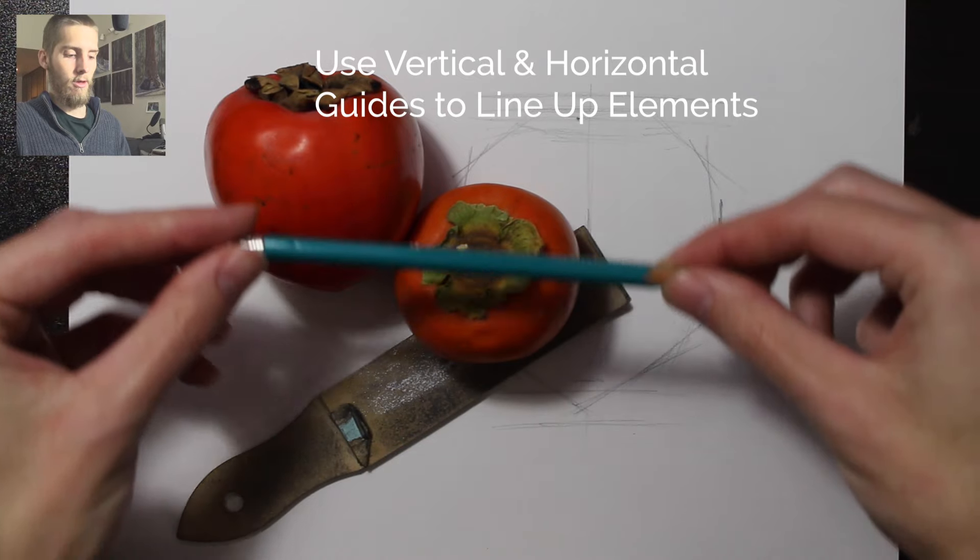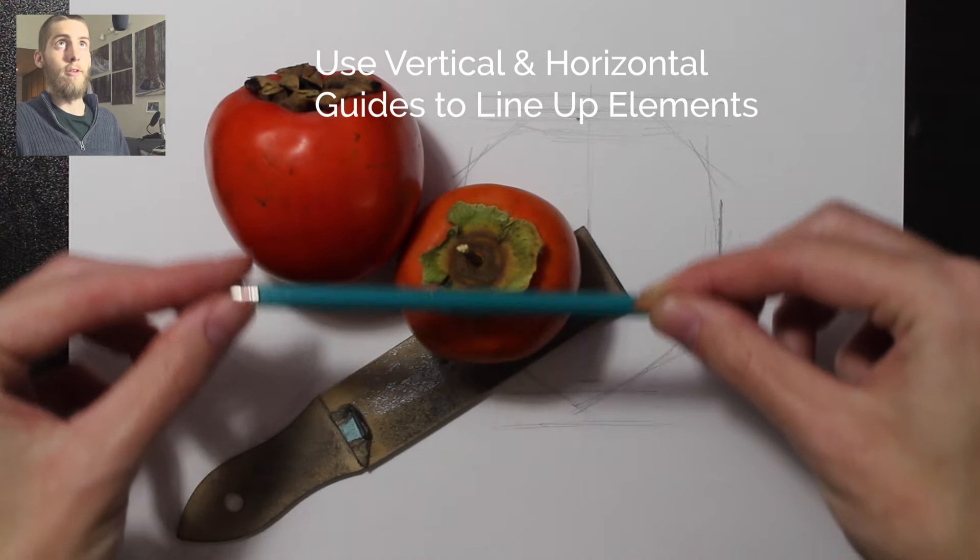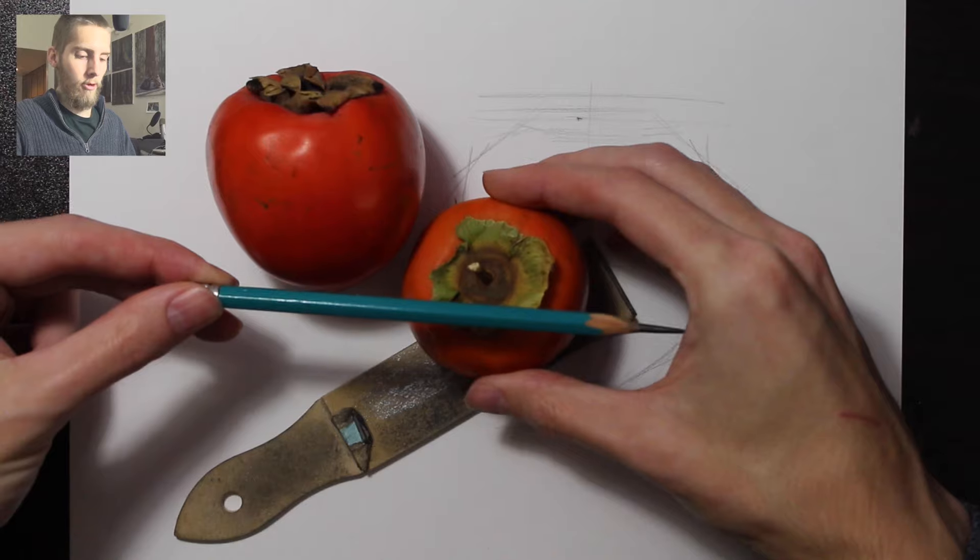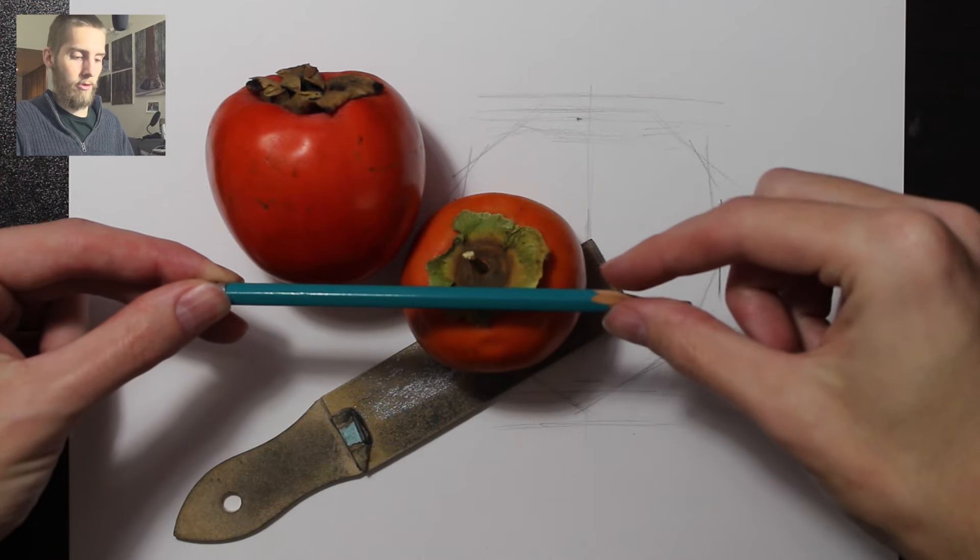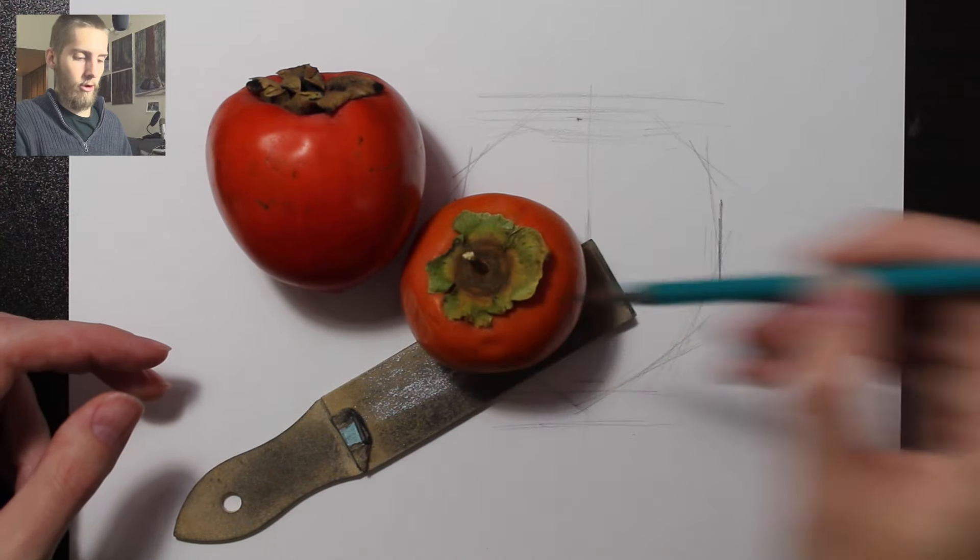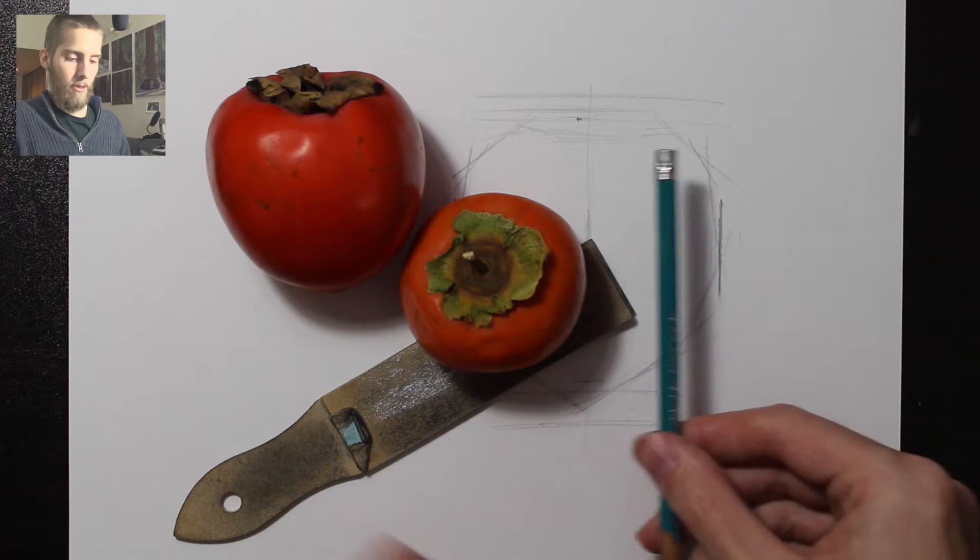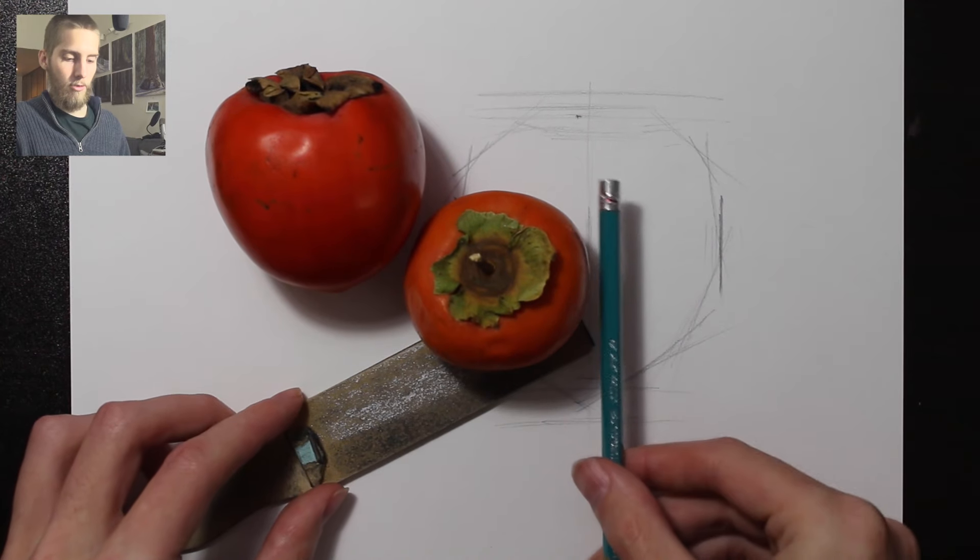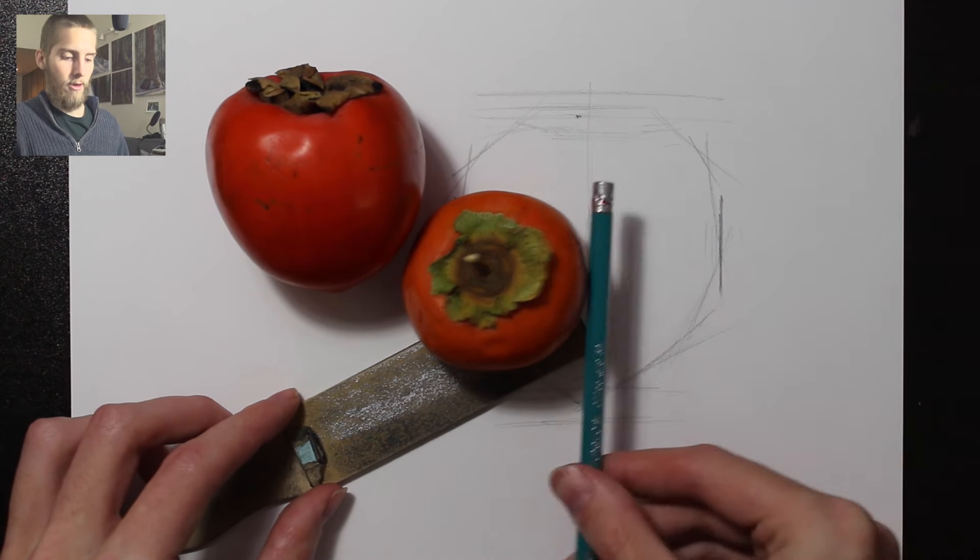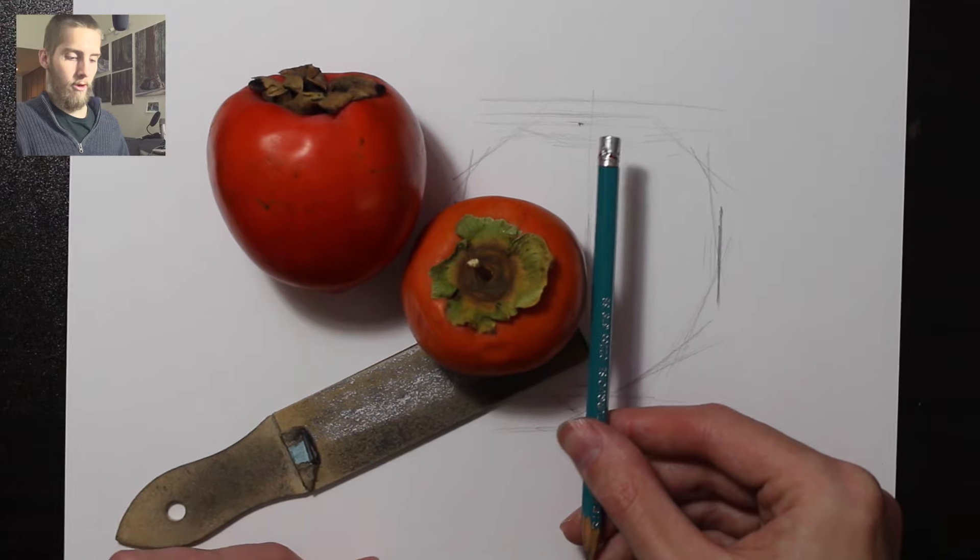You can see, okay, the bottom of this persimmon lines up with the middle of this other persimmon. So that's a guideline that we'd want to keep in mind. And these two objects here line up exactly on this vertical line.